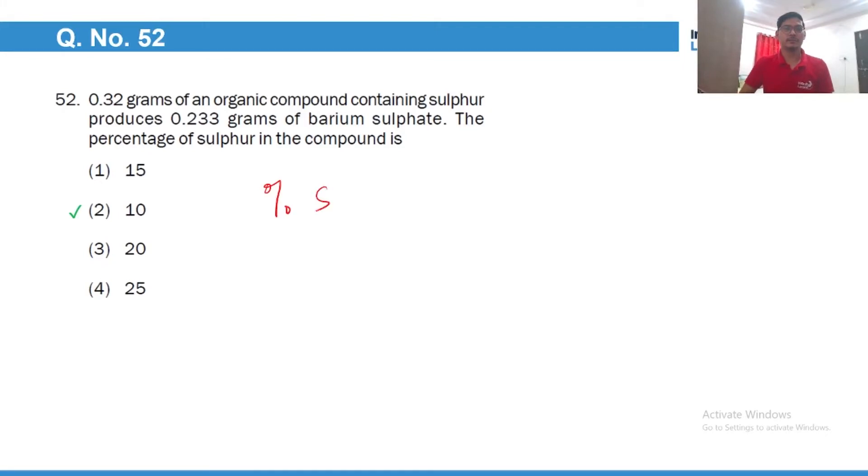Percentage sulfur would be the molar mass of sulfur divided by the molar mass of the compound in which it is precipitated, which is barium sulfate. The molar mass of barium sulfate is 233 multiplied by the mass of the compound precipitated, 0.233 divided by the mass of the original compound, 0.32, and because we are calculating percentage, multiply by 100. So it comes out to be 10 percent.